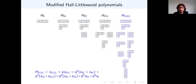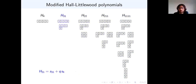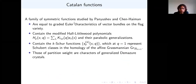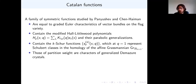Here are the various modified Macdonald polynomials for partitions of length 4, just to give you some flavor, since Catalan functions are a natural generalization of this class. Other things that Catalan functions include are certain parabolic generalizations of these modified Macdonald polynomials and what are known as the K-Schur functions.